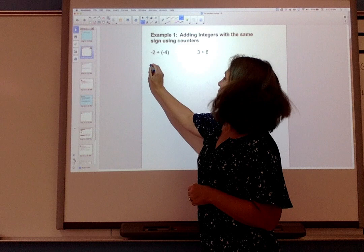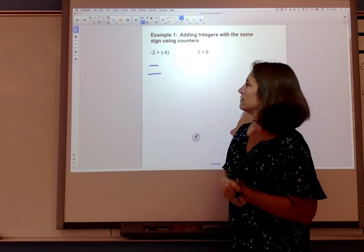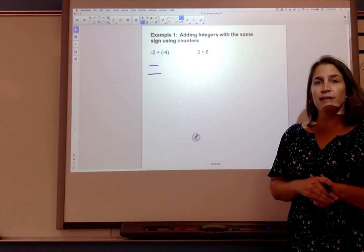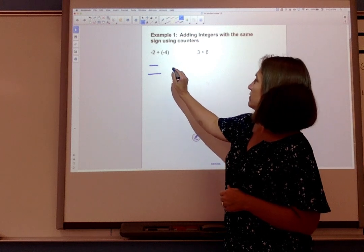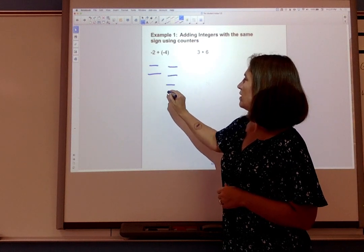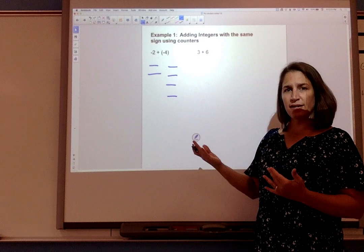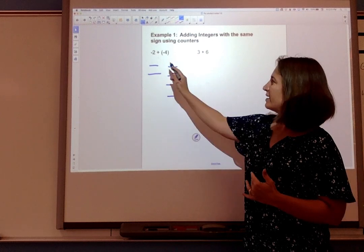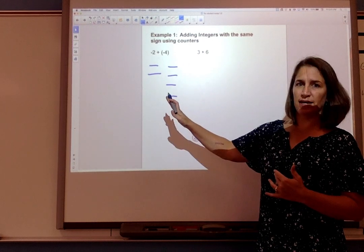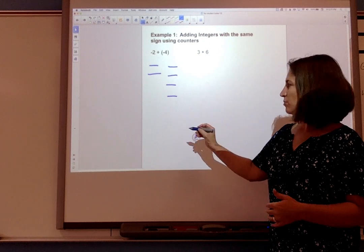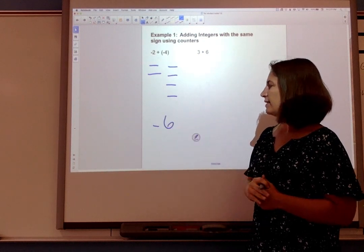So negative 2 would look like this and then I'm gonna add to that four more negatives. One, two, three, four. So since I have a negative plus a negative I can just add up all of these negatives together. I have six negative symbols so my integer is -6.